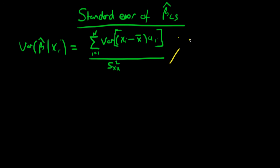What does that mean explicitly? It means the variance of u_i given x_i is completely independent of x_i. It's just equal to some constant sigma squared.